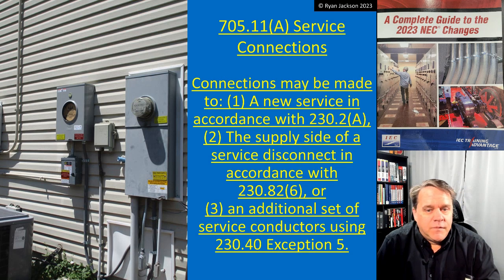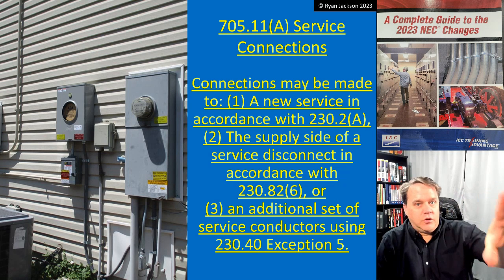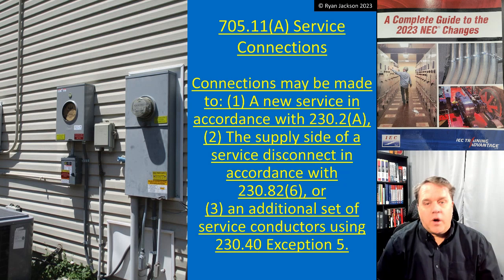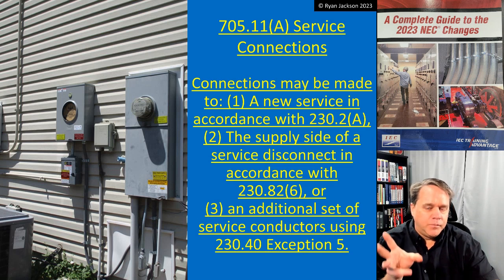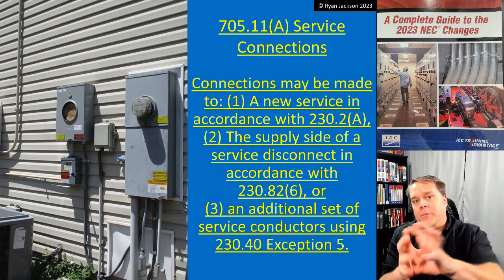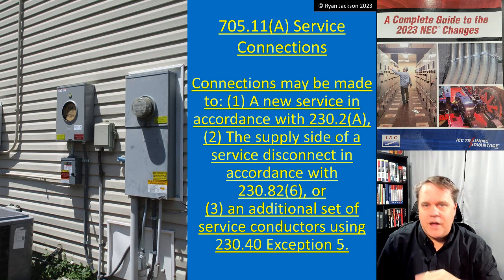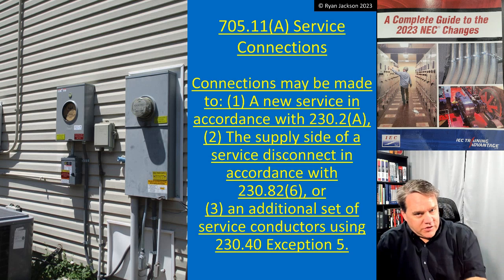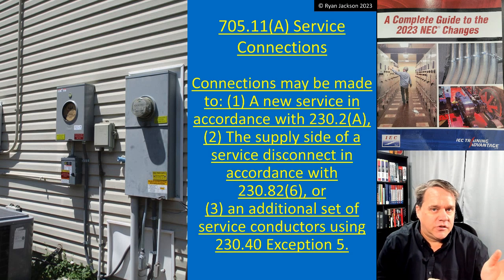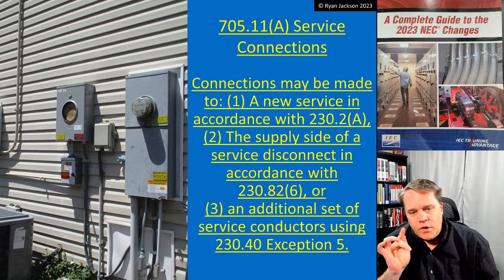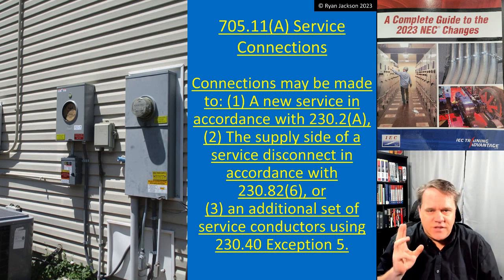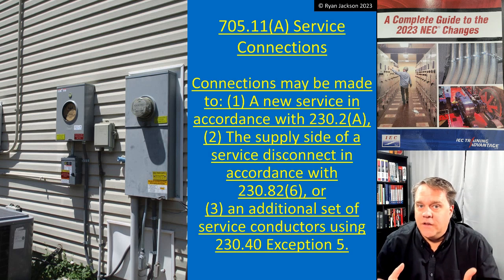Connections may be made to a new service in accordance with 230.2(A), so you create a new service for your interconnect system; or on the supply side of a service disconnect in accordance with 230.82 item 6, which is one of the permitted things you can do upstream of the service. 230.82 gives a list of about 10 items saying nothing can be installed upstream of the service disconnect except those items — and one of them is an interconnected power production source. Or you can use an additional set of service conductors using 230.40 Exception No. 5. Article 705 is by its nature somewhat complex.